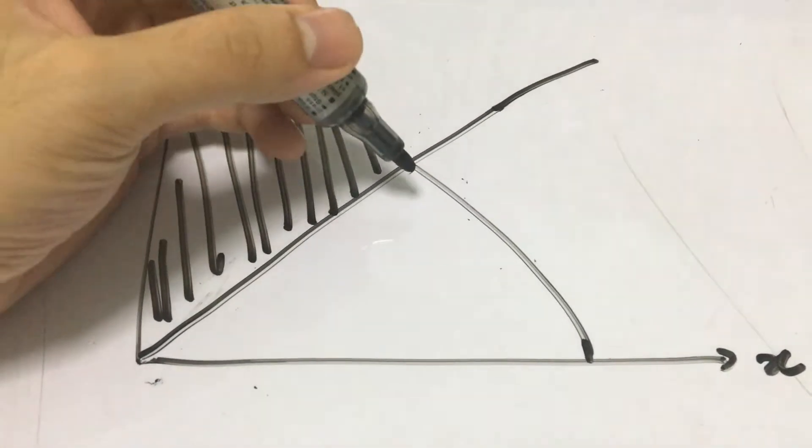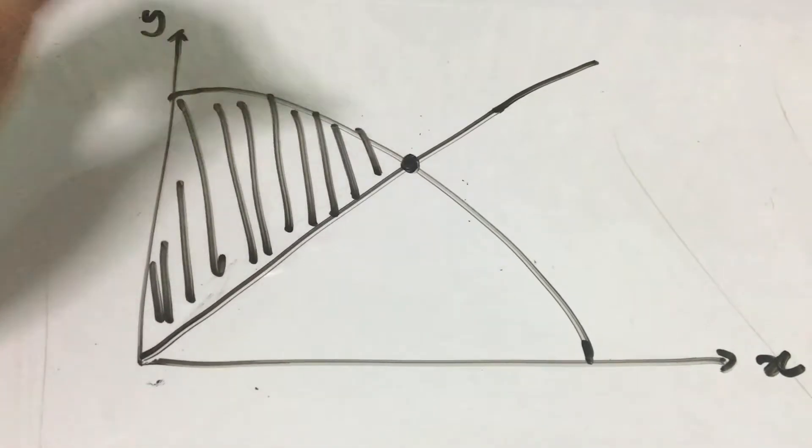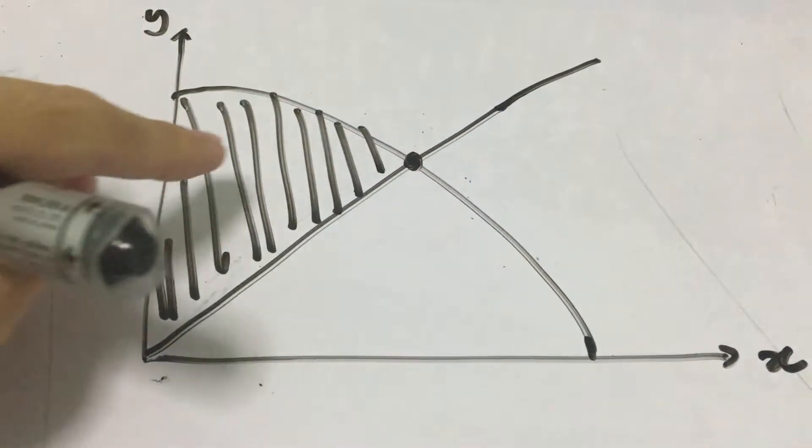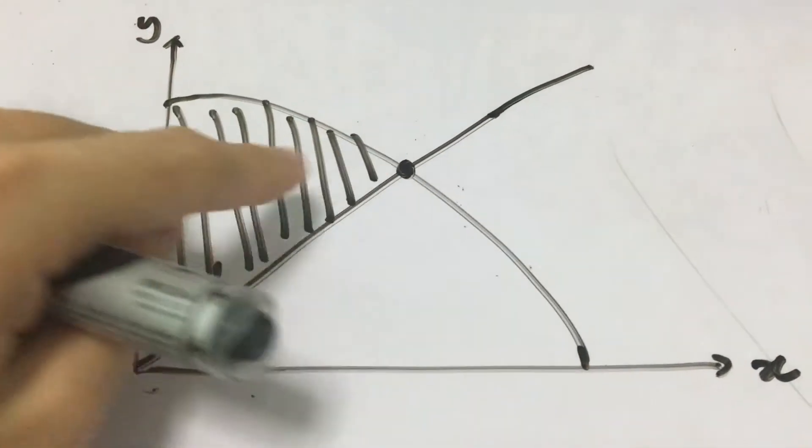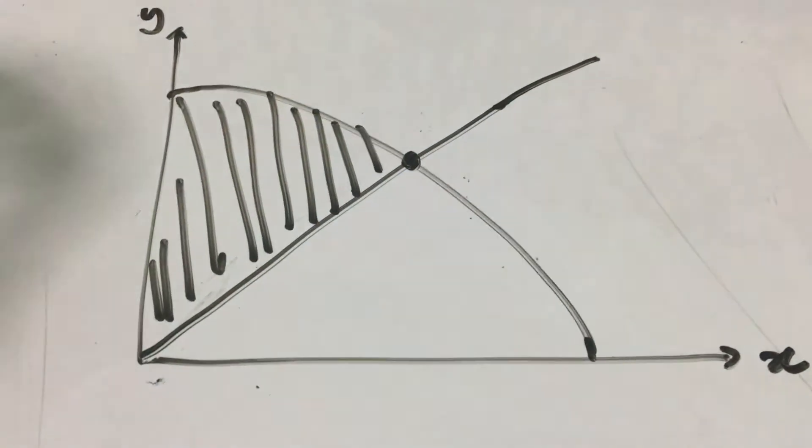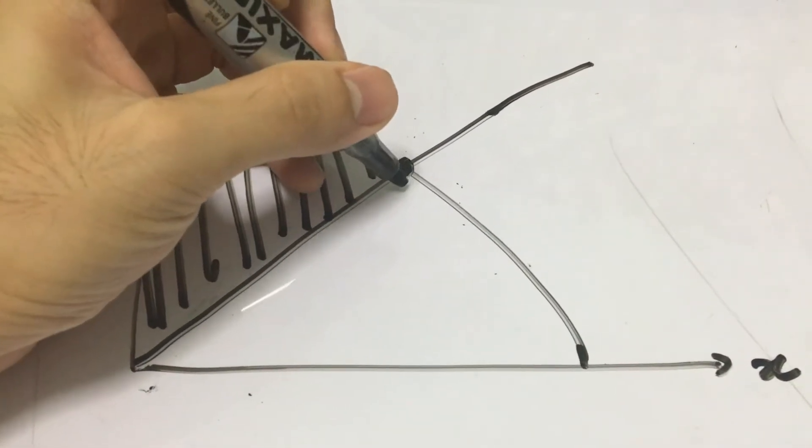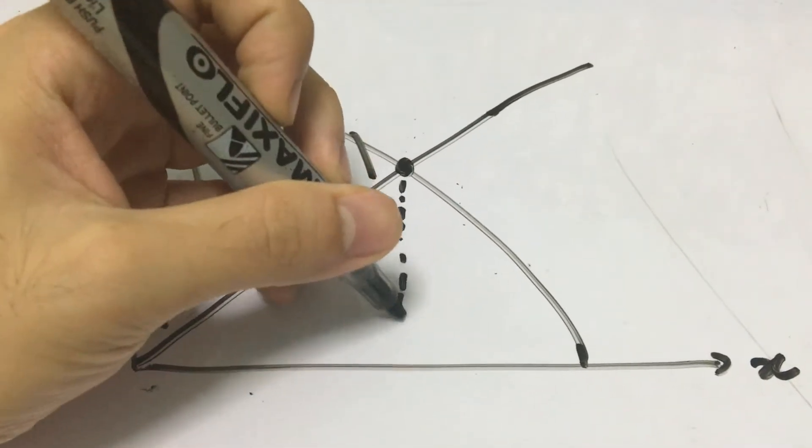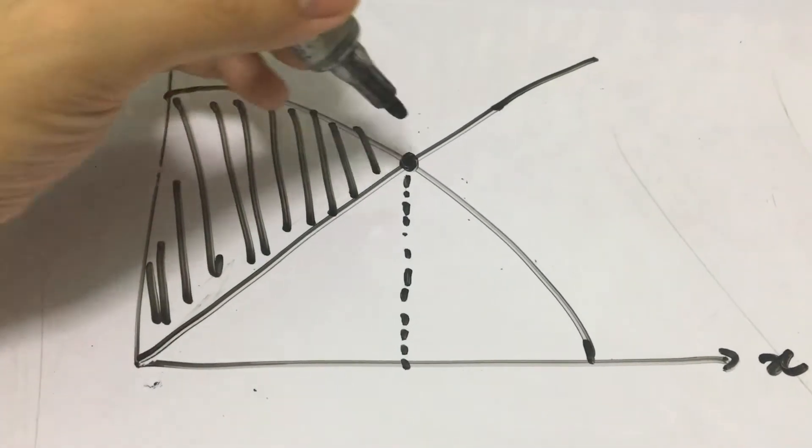You have to draw this invisible line from the point of intersection—any point of intersection between two curves or maybe a line and a curve—and draw a line down towards the axis. It can be the x-axis or the y-axis.